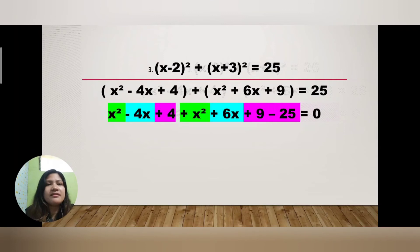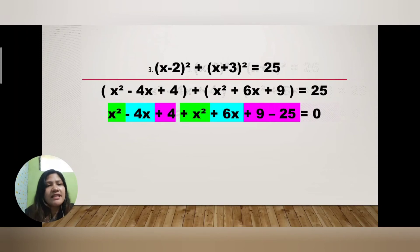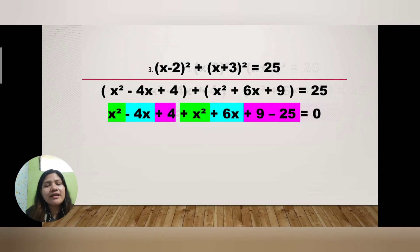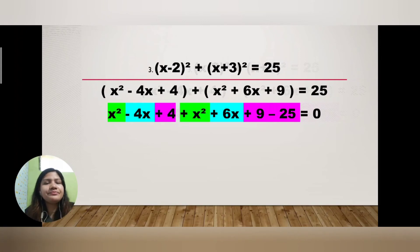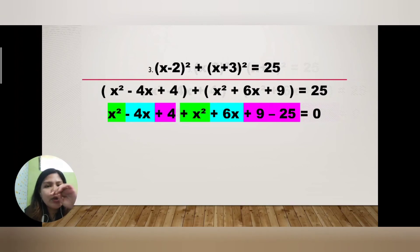Remove the parentheses and transpose positive 25 to the left side: x² − 4x + 4 + x² + 6x + 9 − 25 = 0. Then combine like terms — terms with the same variable and exponent are like terms. Combine the x² terms: x² + x² = 2x².